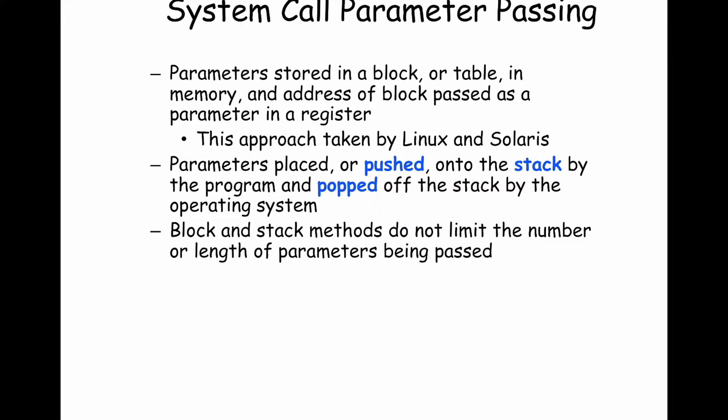When the OS runtime runs the implementation of the system call, it refers to that register to get the pointer value and access memory to get those parameters. Memory is much bigger than the register file, so if you have many parameters, you can use system memory. You can also push parameters onto the stack — the stack is the data structure from your data structures class, and it exists in RAM. When you push something you're allocating on the stack; when you pop, you're deallocating. The semantics are last-in, first-out. You push parameters when making your system call from user mode, communicate the stack pointer in a register, and the OS runtime refers back to the stack to get those parameters.